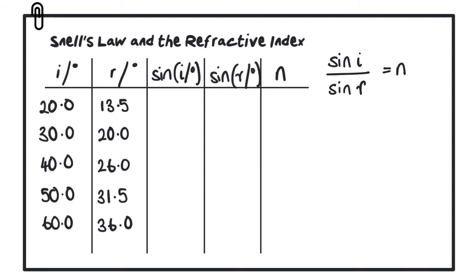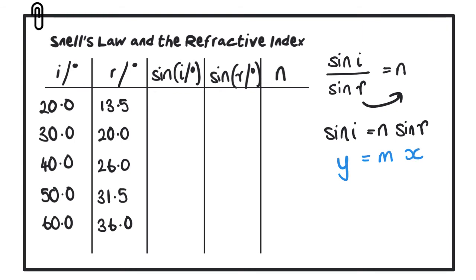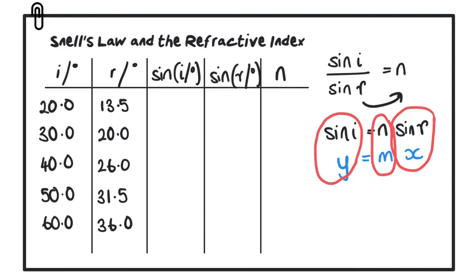The second method is graphical. We plot sine i on the y-axis and sine r on the x-axis. Rearranging the equation — sine i over sine r equals n — gives sine i equals n times sine r. Comparing this with the straight-line equation y equals mx plus c, if we plot sine i against sine r the gradient of the graph gives us the refractive index n.